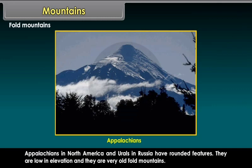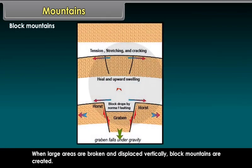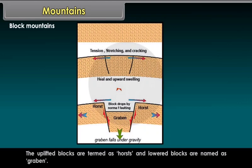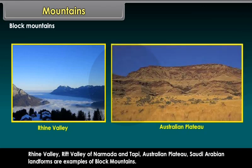Block Mountains. When large areas are broken and displaced vertically, block mountains are created. The uplifted blocks are termed as horst and the lowered blocks are named as graben. Rhine Valley, Rift Valley of Narmada and Tapti, Australian Plateau, and Saudi Arabian landforms are examples of block mountains.